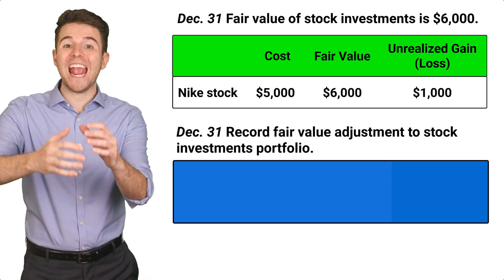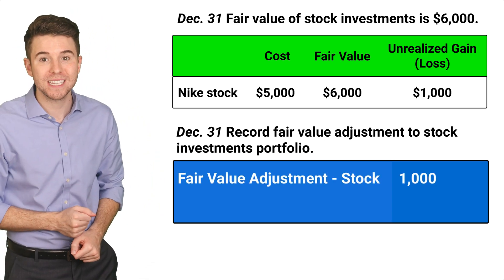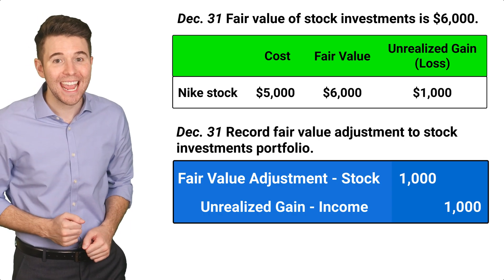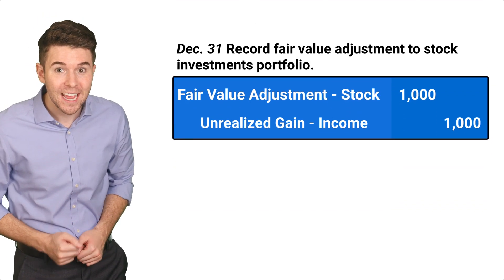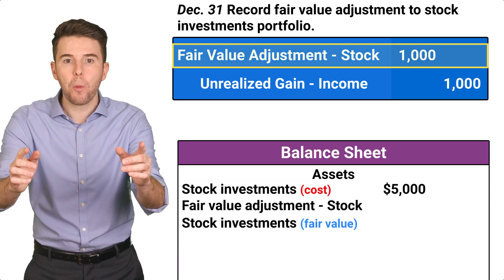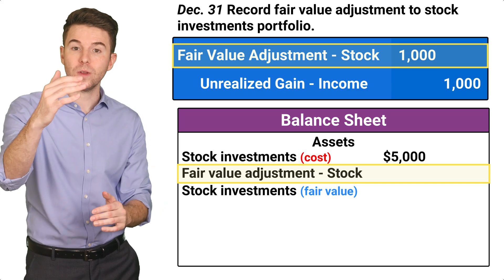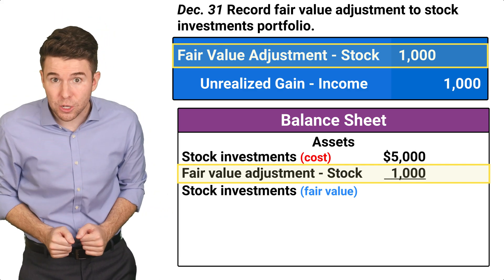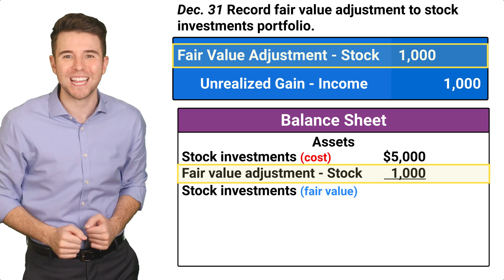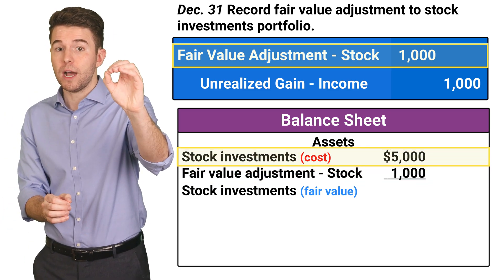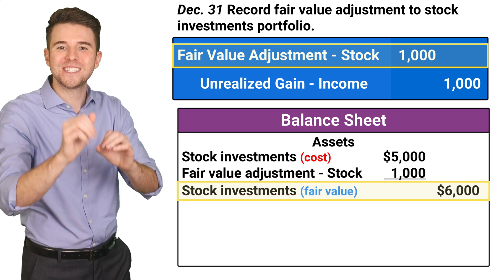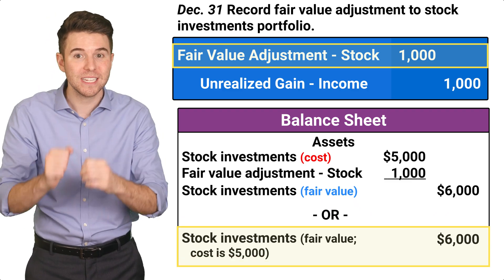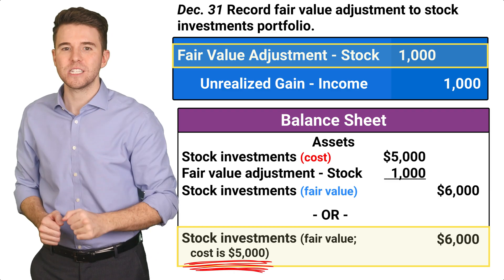To do this, we record a debit to fair value adjustment stock for $1,000 and a credit to unrealized gain income for $1,000. The fair value adjustment stock account is reported on the balance sheet and can either increase or decrease the reported value of the stock investments. In our example, the $1,000 increases the value of the portfolio of stock investments from its $5,000 cost to its fair value of $6,000.